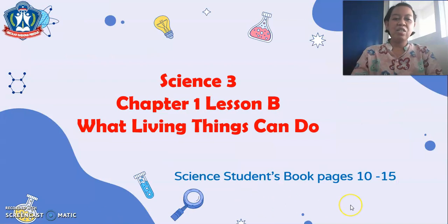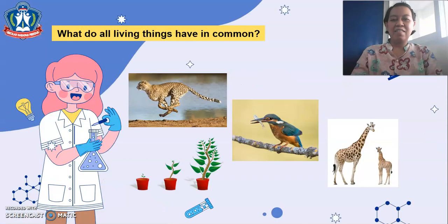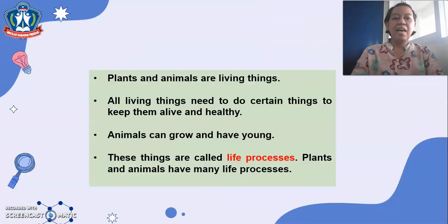Now let's turn to pages 10 to 15 for Lesson B, What Living Things Can Do. Our learning aim is to know the common life processes of plants and animals. Plants and animals are living things. All living things need to do certain things to keep them alive and healthy. Animals can grow and have young. These things are called life processes. Plants and animals have many life processes.